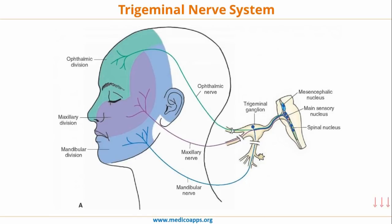There are three sensory nerves associated with the trigeminal nerve, or three divisions of the trigeminal nerve. One is the ophthalmic nerve, the second is the maxillary nerve, and the third is the mandibular nerve. Let's look at each of them one by one.